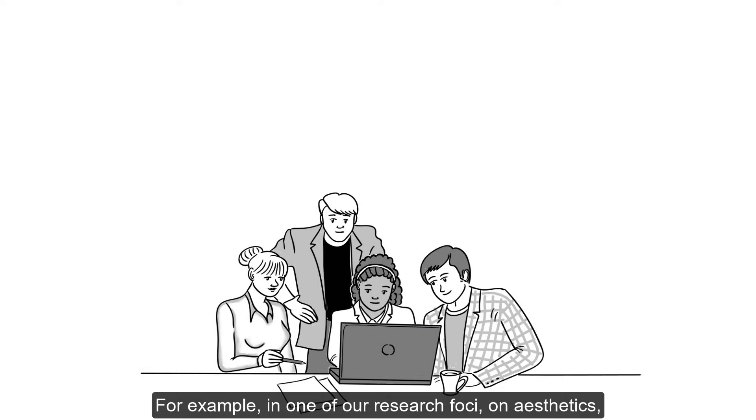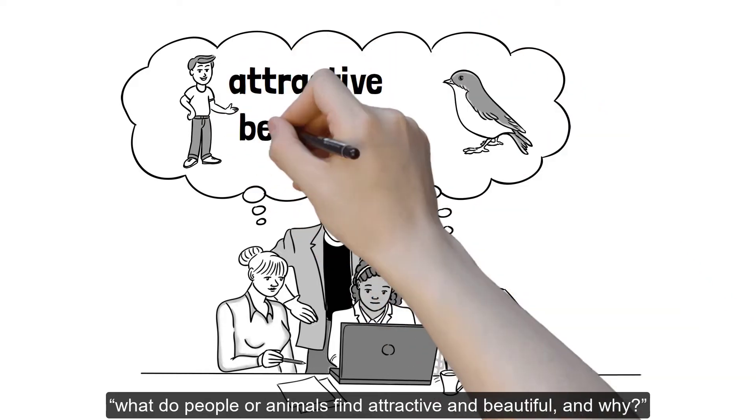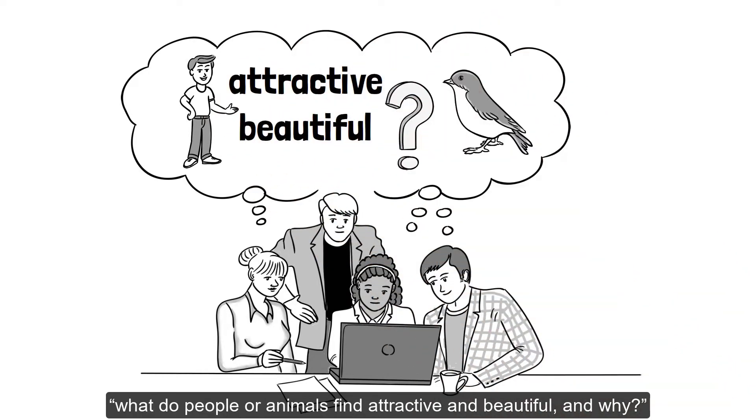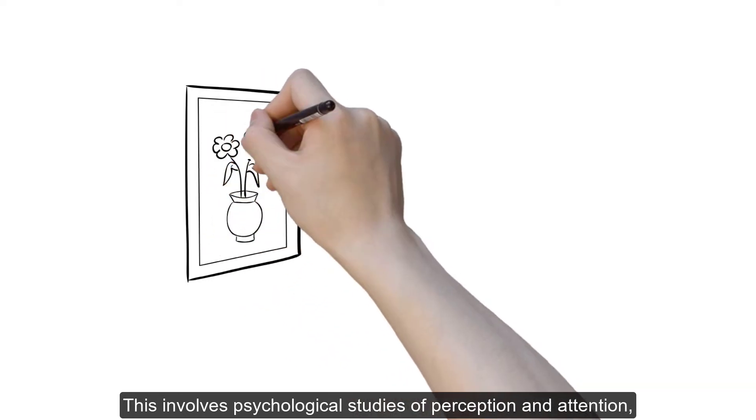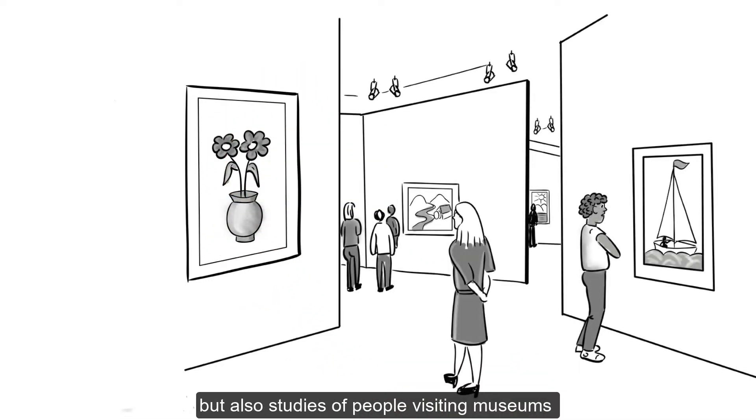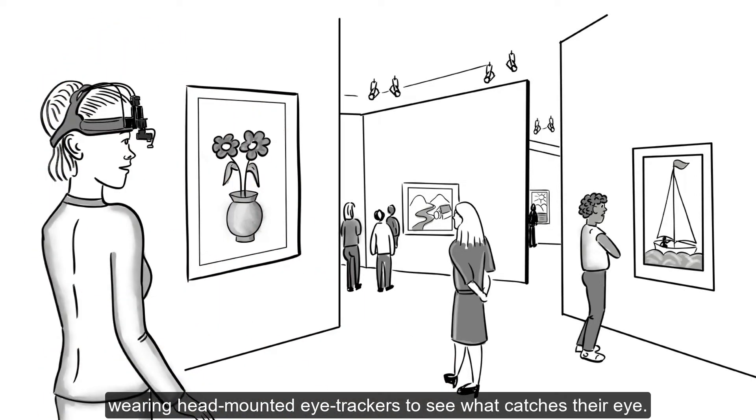For example, in one of our research foci on aesthetics, we ask questions such as: what do people or animals find attractive and beautiful, and why? This involves psychological studies of perception and attention, but also studies of people visiting museums wearing head-mounted eye trackers to see what catches their eye.